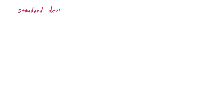Number six asks us to match each representation with the appropriate measure of variability. We have two measures of variability. One of them is standard deviation, and we calculate this by measuring the distances from all of the points to the middle of the data. This uses all of the points.